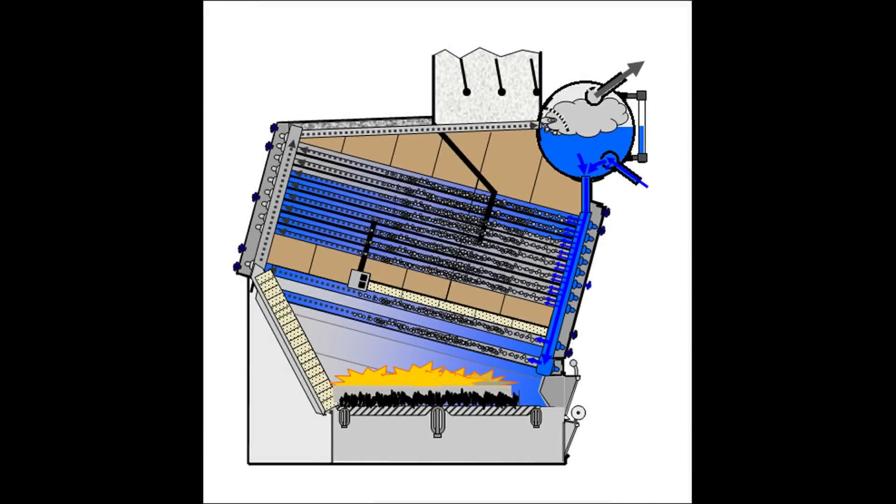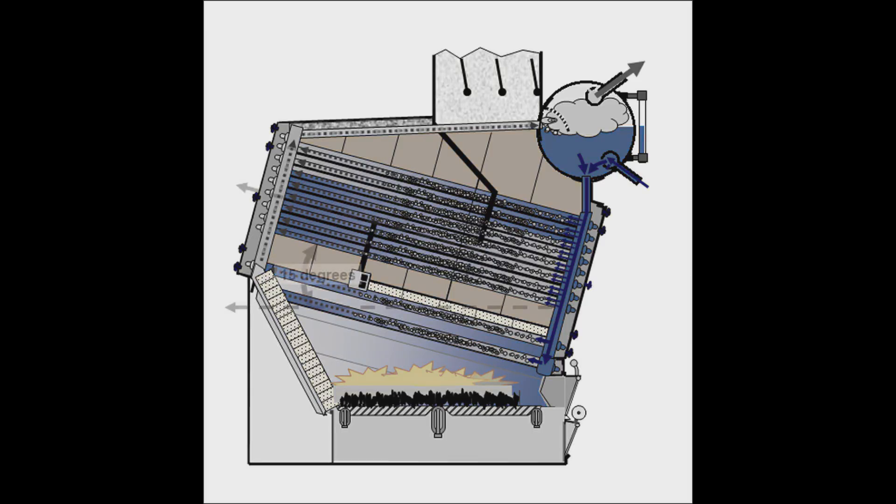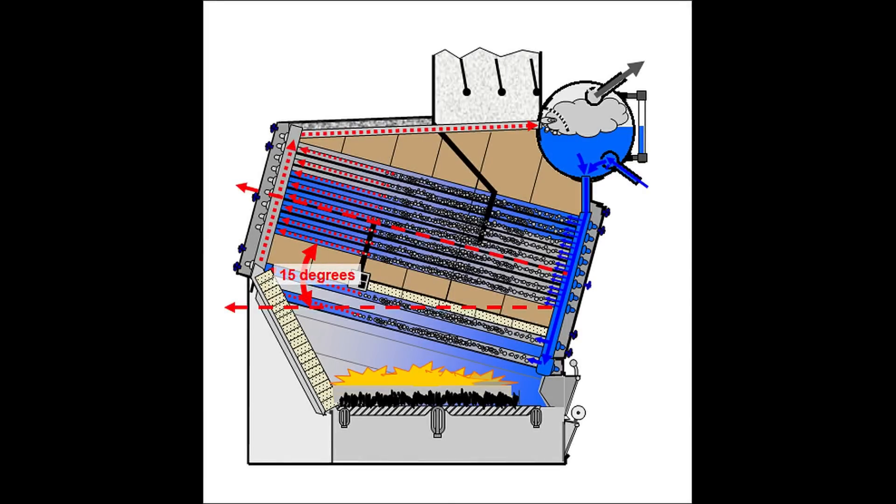There's one last thing to notice about all of the tubes in the water jackets. All are tilted at a 15 degree upward angle from front to rear. This created the lift needed to force steam bubbles to rise from the lower headers containing incoming water to rear headers where steam is collected and sent to the steam water drum.